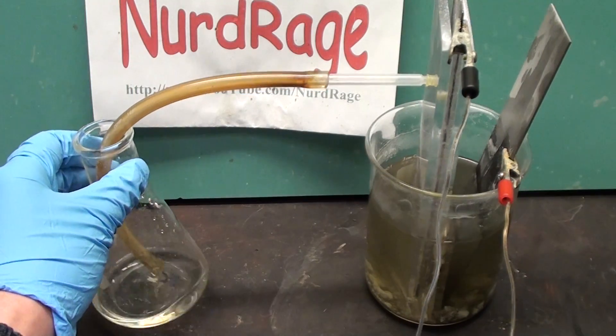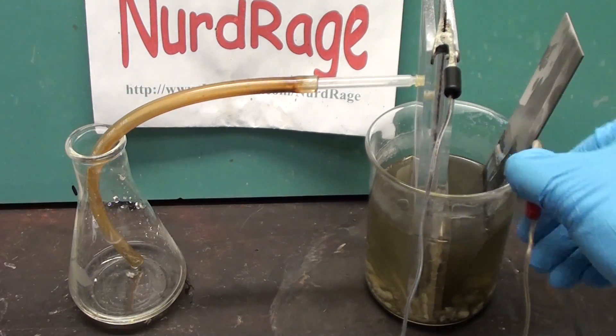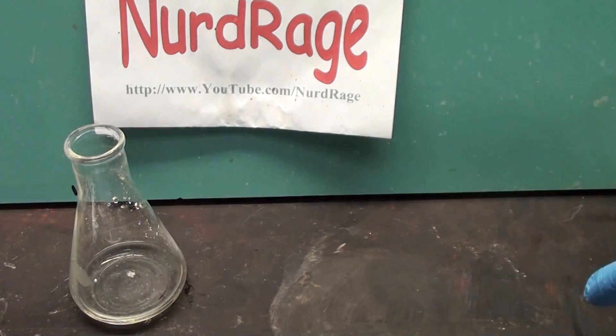Ok, so I've run the cell for several hours and we have a small amount of sodium hydroxide already collected. Let me pour it into two vials. To test it, I'm going to add hydrochloric acid to one.